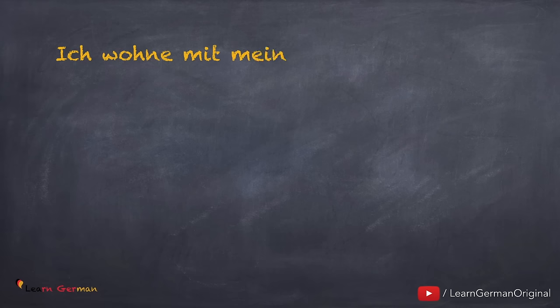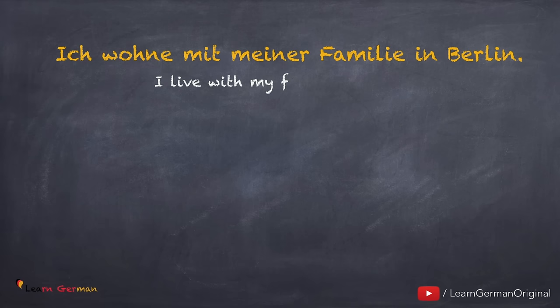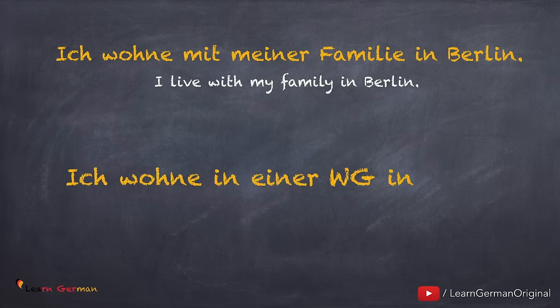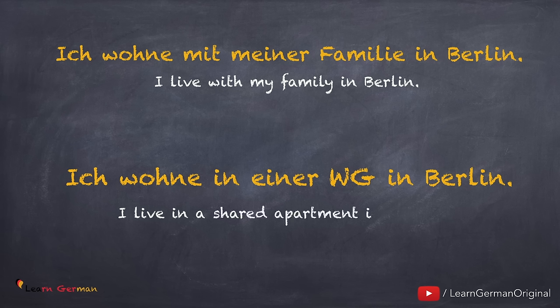And if you're living with your complete family you would say: ich wohne mit meiner Familie in Berlin. If you're living on a sharing basis you would say: ich wohne in einer WG in Berlin.